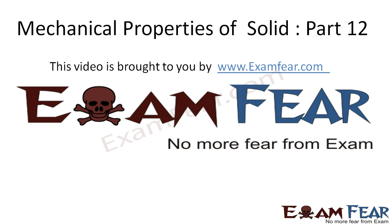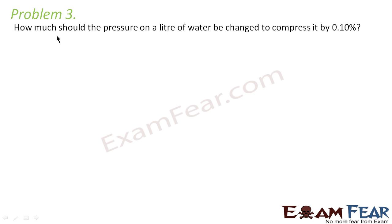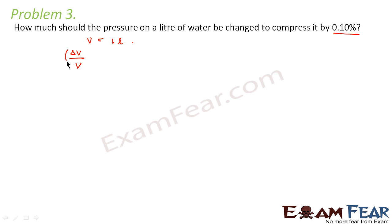Look at the third problem. It says: how much should the pressure on a liter of water be changed to compress it by 0.10 percent? The initial volume of water is 1 liter, and it has to be compressed by 0.10 percent. So delta V by V in percentage equals 0.10 percent — this is given in the question.